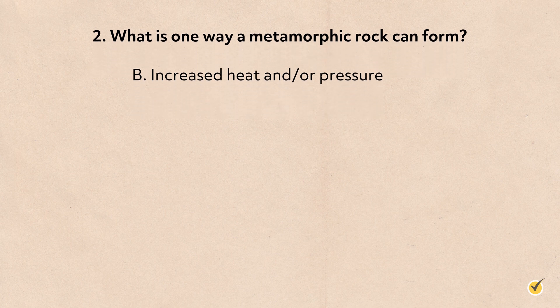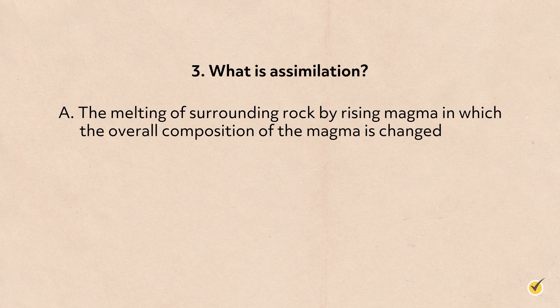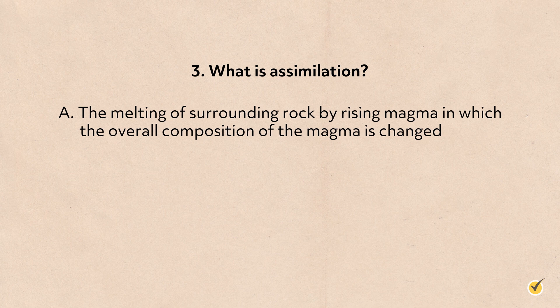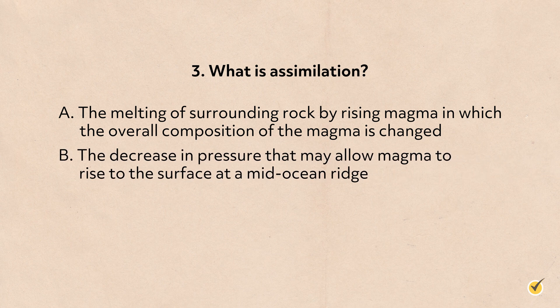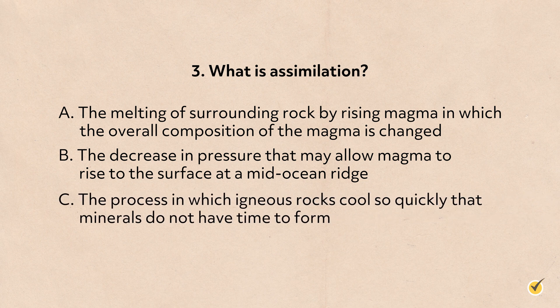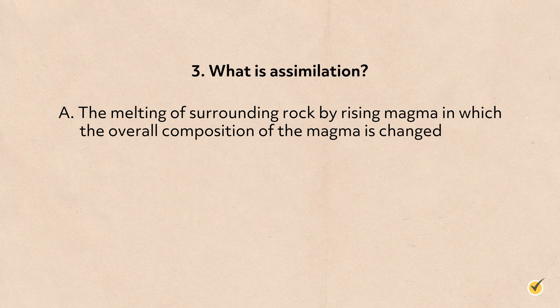Number three: what is assimilation? A, the melting of surrounding rock by rising magma in which the overall composition of the magma is changed; B, the decrease in pressure that may allow magma to rise to the surface at a mid-ocean ridge; or C, the process in which igneous rocks cool so quickly that minerals do not have time to form. The correct answer is A — assimilation is the process of changing the overall composition of a rising magma body. I hope this review was helpful, thanks for watching, and happy studying!